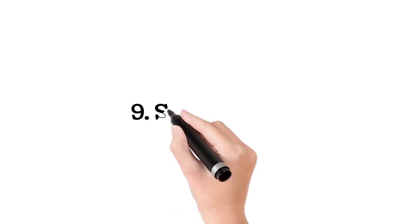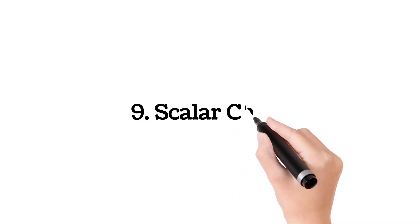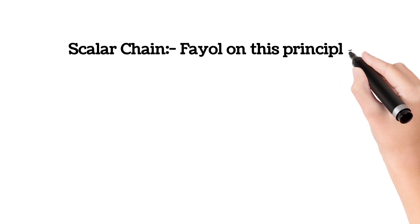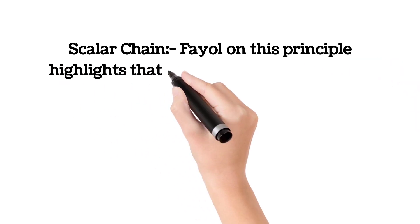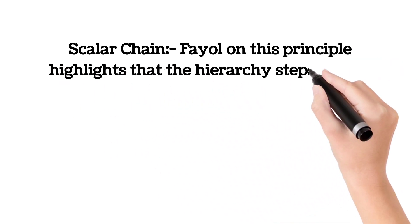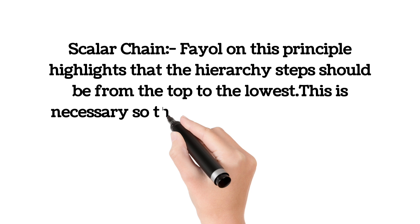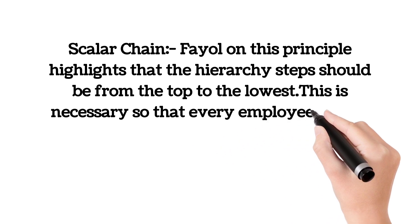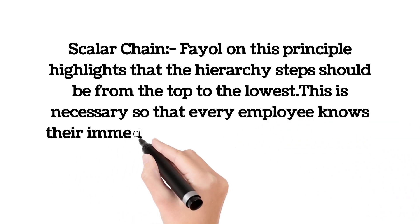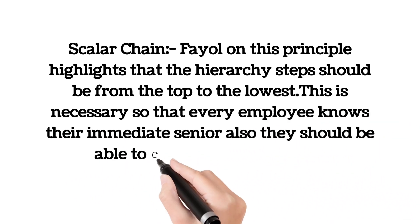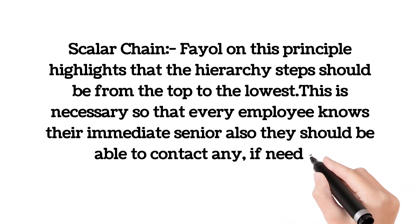Number nine is scalar chain. Fayol, on this principle, highlights that the hierarchy steps should be from the top to the lowest. This is necessary so that every employee knows their immediate senior, and they should also be able to contact anyone if needed.